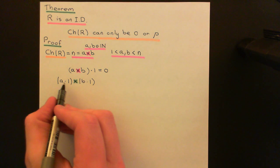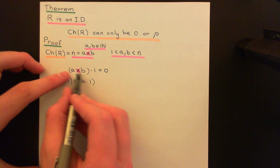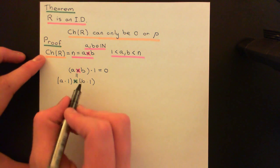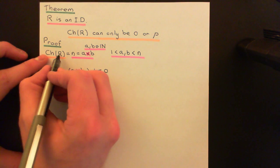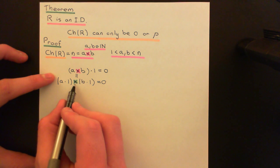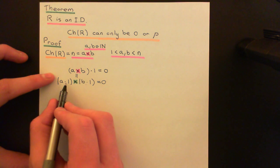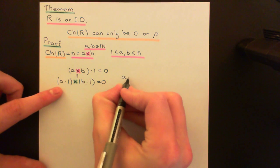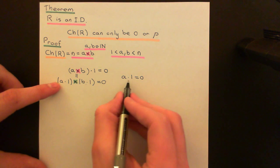Working in reverse, we have (A dot 1) times (B dot 1) = 0. Since R is an integral domain and I have a product of two ring elements giving zero, at least one of them must equal zero. So let's say A dot 1 = 0, meaning 1 added to itself A times gives 0.